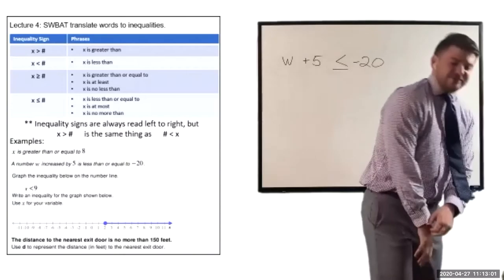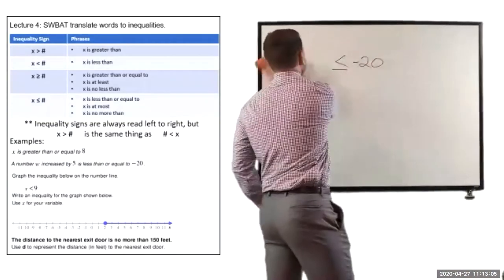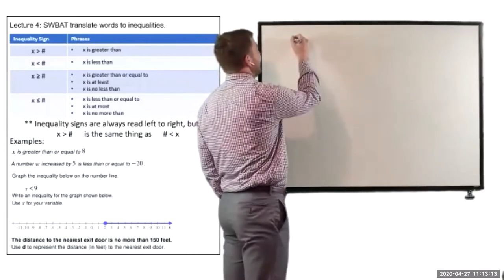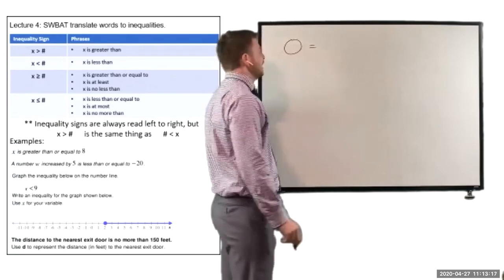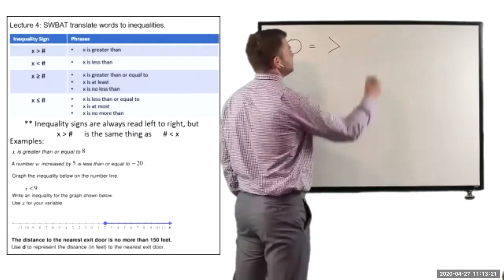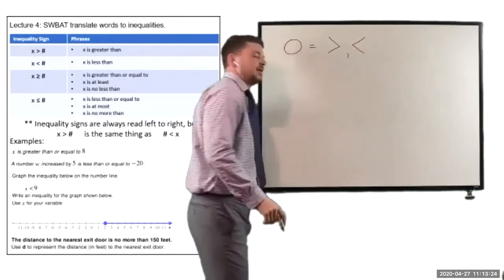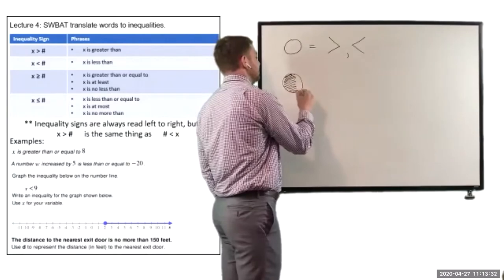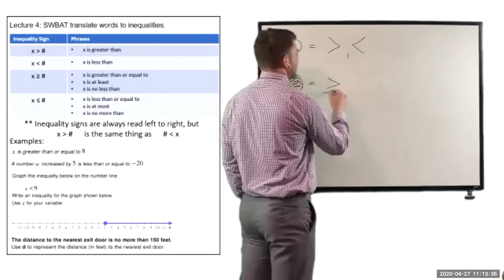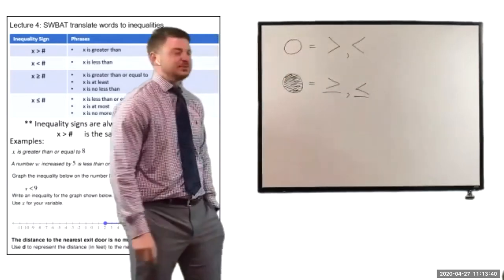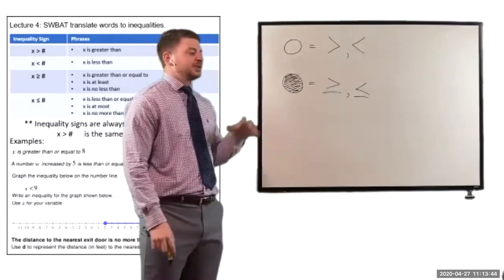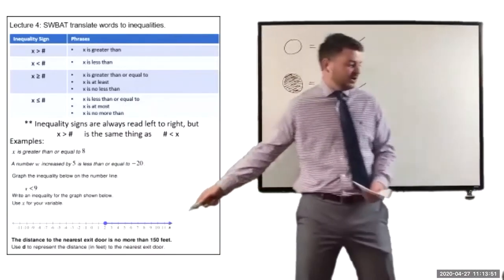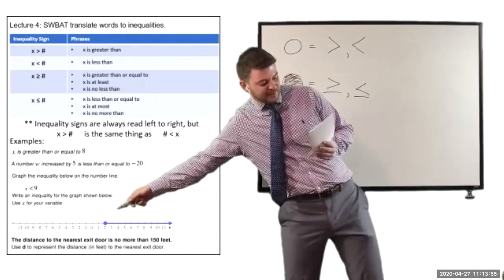Now let's move on to the graphs. If we're looking at this graph, there are a couple of important things to note. One important thing is that if we have an open circle on a graph, that is going to represent a greater than or a less than sign. A closed circle — a filled-in circle — represents greater than or equal to, or less than or equal to.